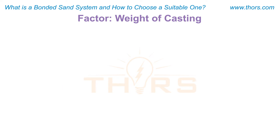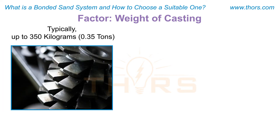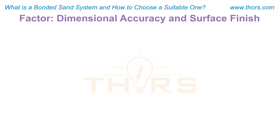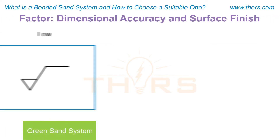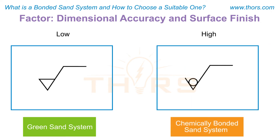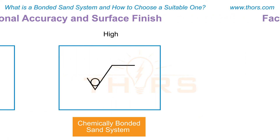The third factor is the weight of the casting. To produce a low-weight casting, typically up to 350 kilograms, the green sand system is preferred, and the chemically bonded sand system has no weight limitations. The fourth factor is dimensional accuracy and surface finish. In a green sand system, the dimensional accuracy and surface finish is lower when compared to a chemically bonded sand system.